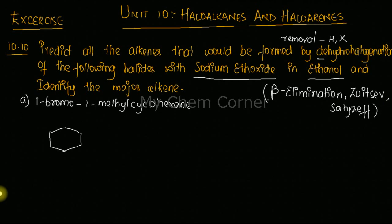The main hydrocarbon is cyclohexane — a hexane ring. On the first position I have a methyl group, and on the first position I also have a bromo group. Considering this as my first position, I'm placing Br and CH₃ as per the name given to us. This is my compound.